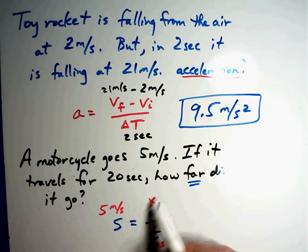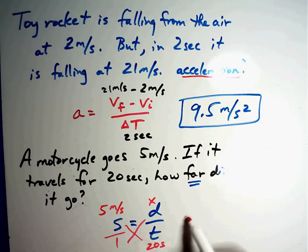1 times x is x. 5 times 20. 5 times 20 is 100. 100, I have a second and a second. So the answer must be meters. That would be the answer I would be looking for.